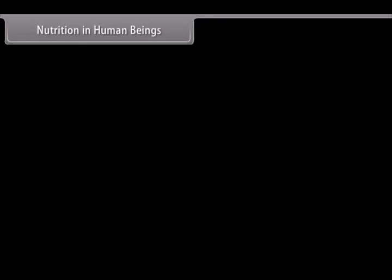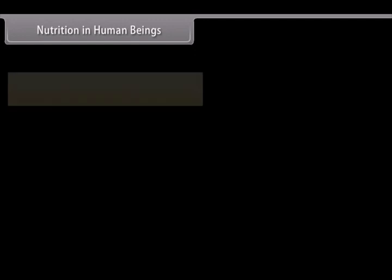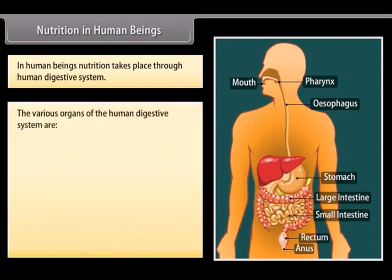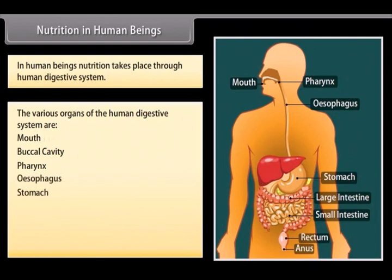In human beings, nutrition takes place through the human digestive system. The various organs of the human digestive system are: mouth, buccal cavity, pharynx, esophagus, stomach, small intestine, large intestine, rectum, and anus.